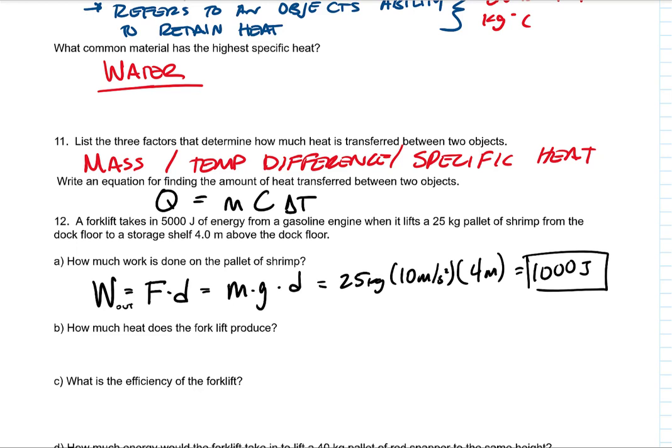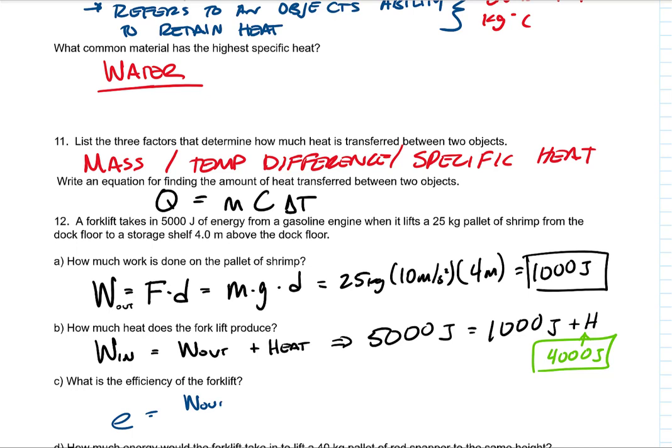How much heat does the forklift produce? What we're going to have is work in equals work out plus heat. The work in is 5,000 joules of energy. That equals the work out, 1,000 joules, plus the heat. Based on what we see here, that heat is 4,000 joules. So 4,000 joules are lost to heat and our efficiency is the work out over the work in times 100%. So 1,000 divided by 5,000 times 100% gives me 20%.